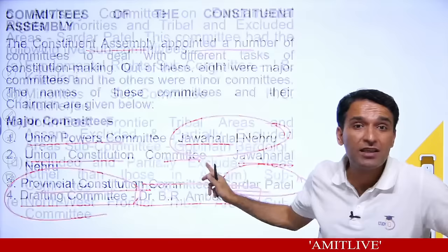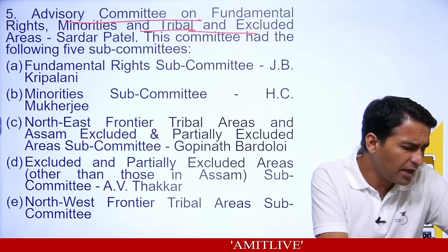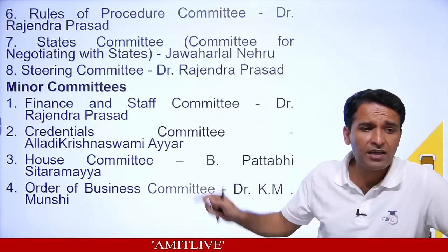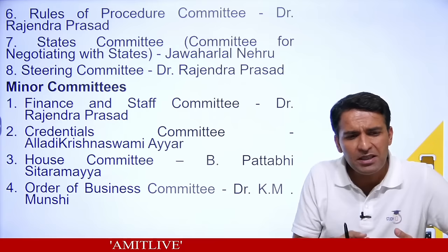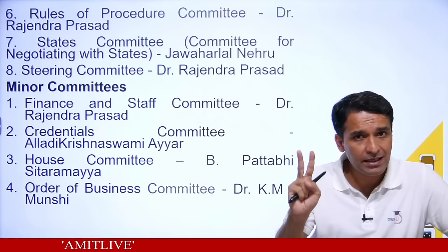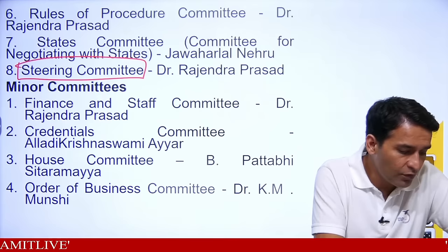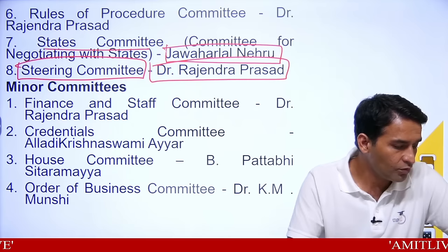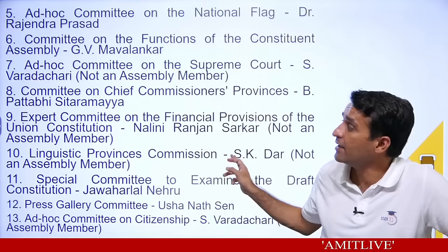The Drafting Committee is the most important. As we became independent on 15th August 1947, after 14 days, the Drafting Committee was formed. It had 7 members with B.R. Ambedkar as chairman. The seven members' names, if you want to remember: Dr. B.R. Ambedkar as chairman, N. Gopalaswami Ayyangar, Alladi Krishnaswami Ayyar, Dr. K.M. Munshi, Sayyad Muhammad Sadullah, and N. Madhav Rao.